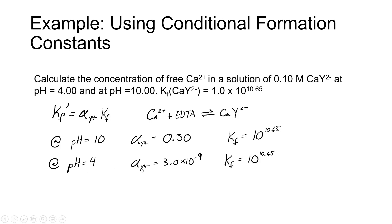At pH 4, we have the alpha Y4 minus value at 3 times 10 to the minus 9th, same formation constant at that pH.